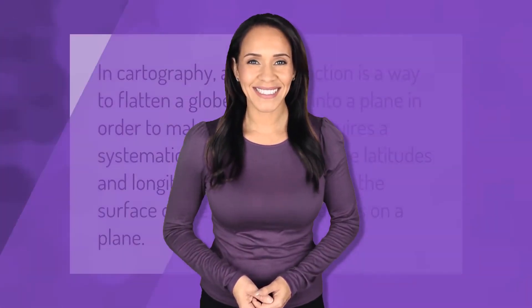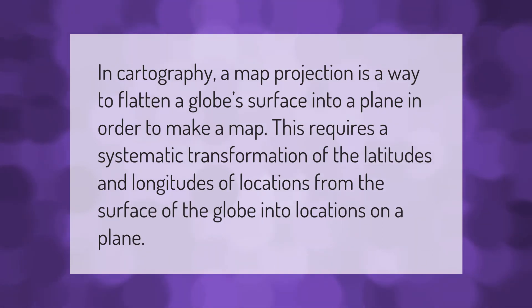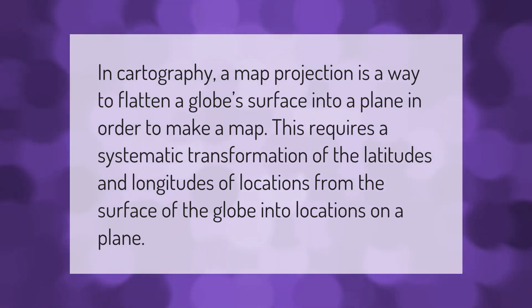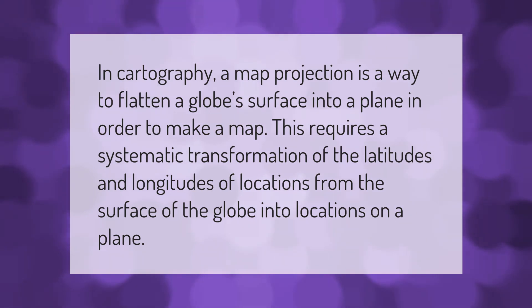In cartography, a map projection is a way to flatten a globe's surface into a plane in order to make a map. This requires a systematic transformation of the latitudes and longitudes of locations from the surface of the globe into locations on a plane.